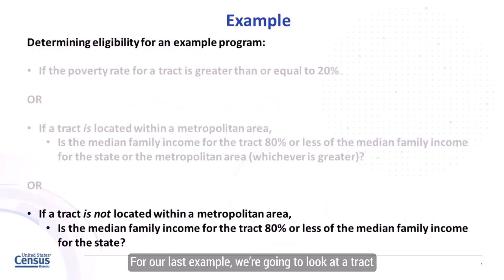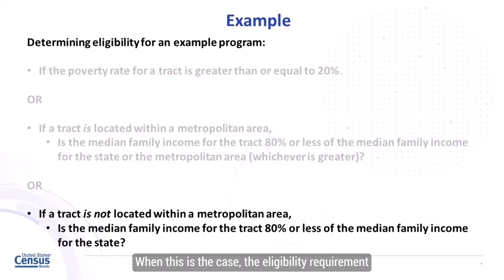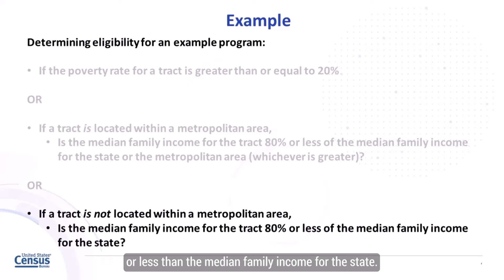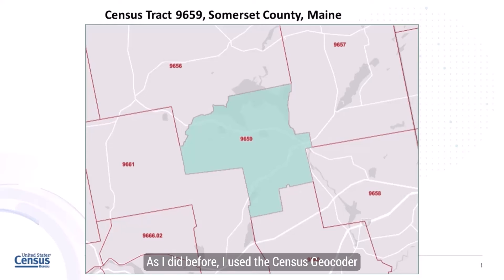For our last example, we're going to look at a tract that is not located within a metropolitan area. When this is the case, the eligibility requirement is that the median family income for the tract must be 80% or less of the median family income for the state. We're going to look at Census tract 9659 in Somerset County, Maine. I used the Census Geocoder and the GeoCore tool to confirm that this tract is not part of any metro area.